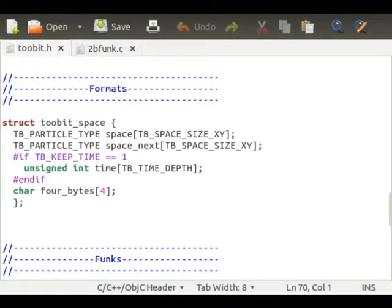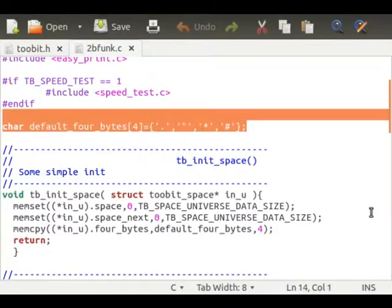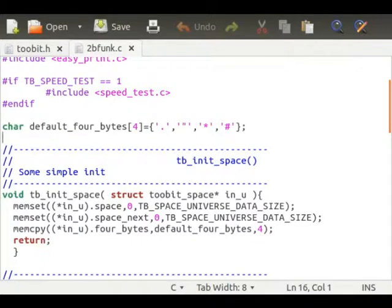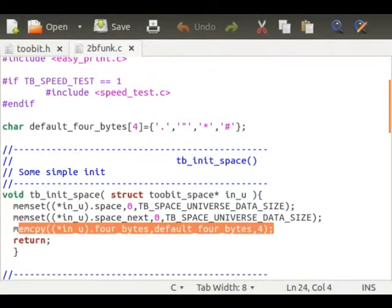The two bit space structure also has a new element called four bytes. This contains the four characters that will be used for print screen quarter byte. The default values are in 2b func.c, and they are initialized in the space structure, among other things, when the new function tb init space is called.